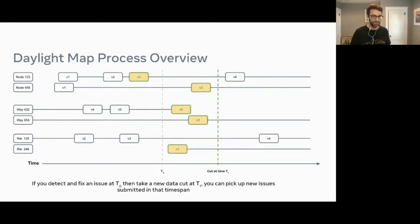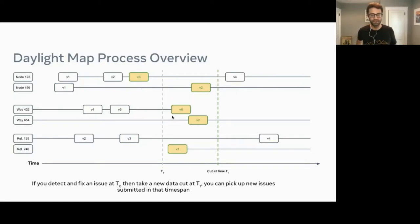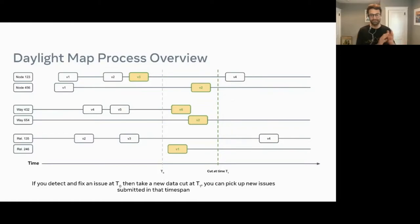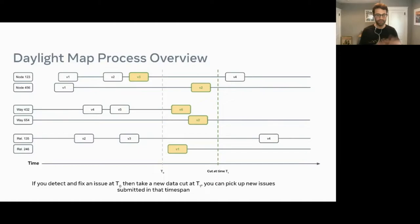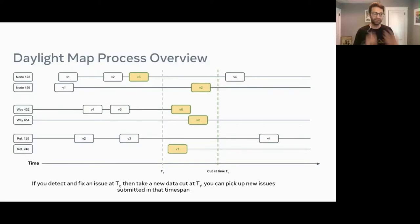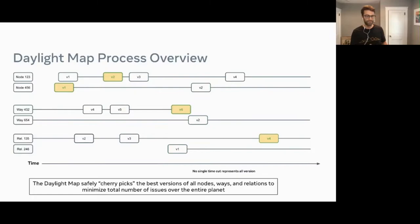The real problem is there's a whole host of other changes that have now made it in since then. All these ways and relations down below have changed too. So if there are any new issues on those elements, now that you've taken them, you have a whole new set of issues to fix. You kind of end up in this loop where you're fixing things, you submit a fix to OSM, you take a new data cut, and now you have a whole host of other issues. Daylight is essentially our solution to that problem.